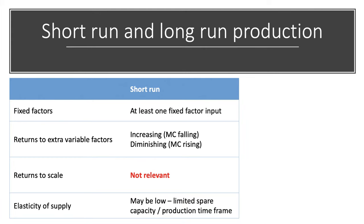The short run production frame is a time period where at least one factor of production — at least one input — is fixed. Typically it's the amount of capital or land, though it doesn't have to be. The business has basically chosen its scale of production and sticks with it in the short run.